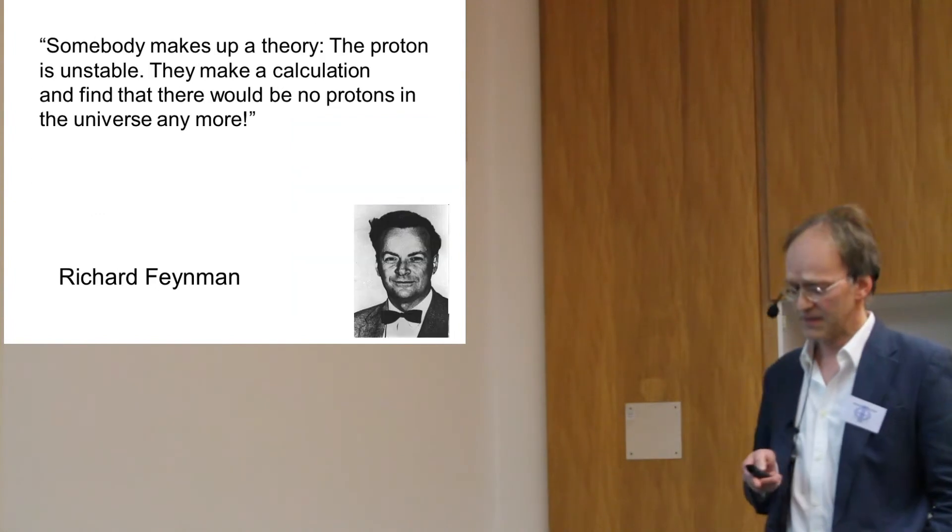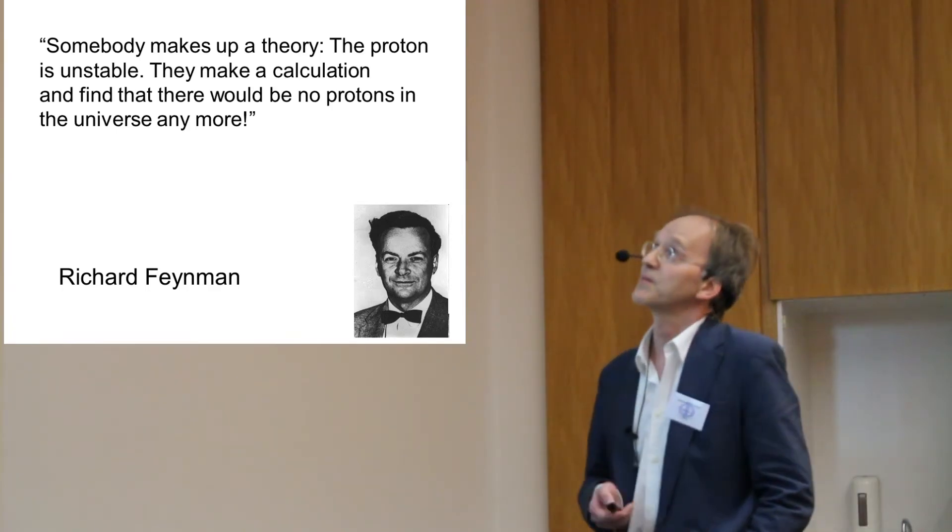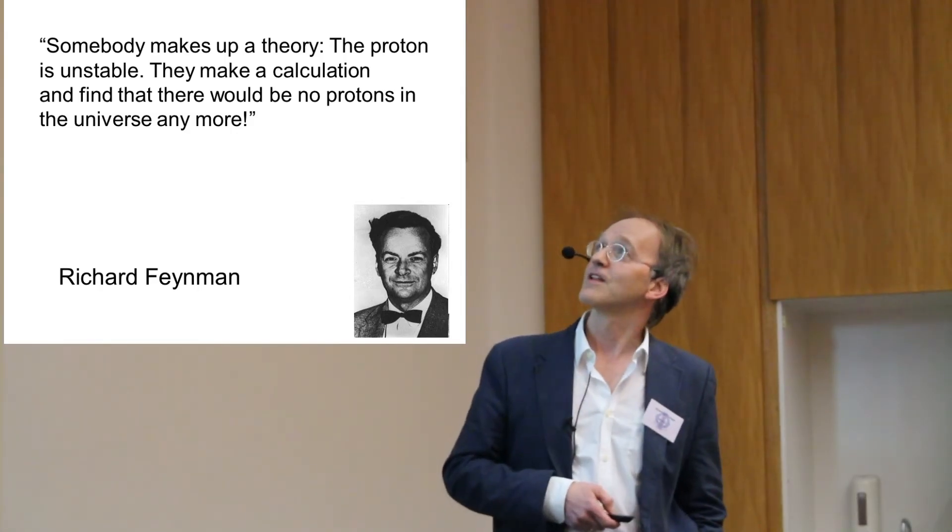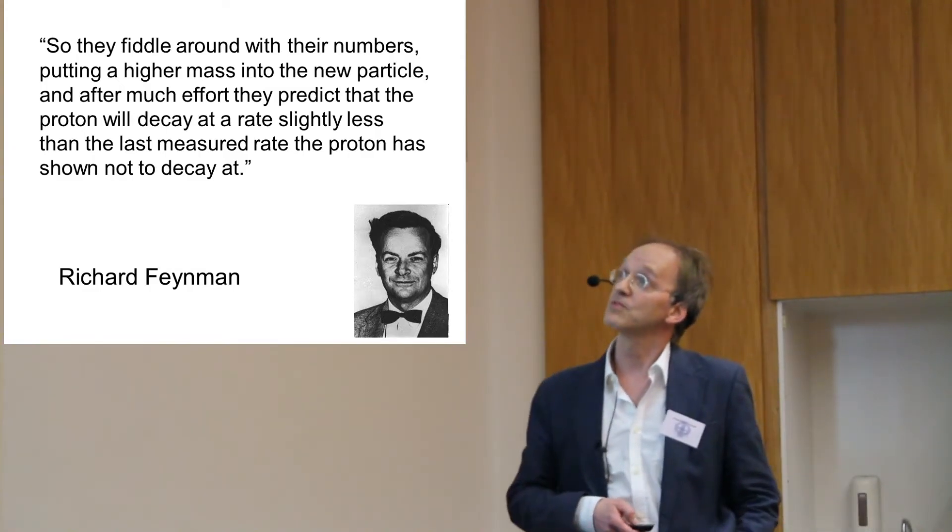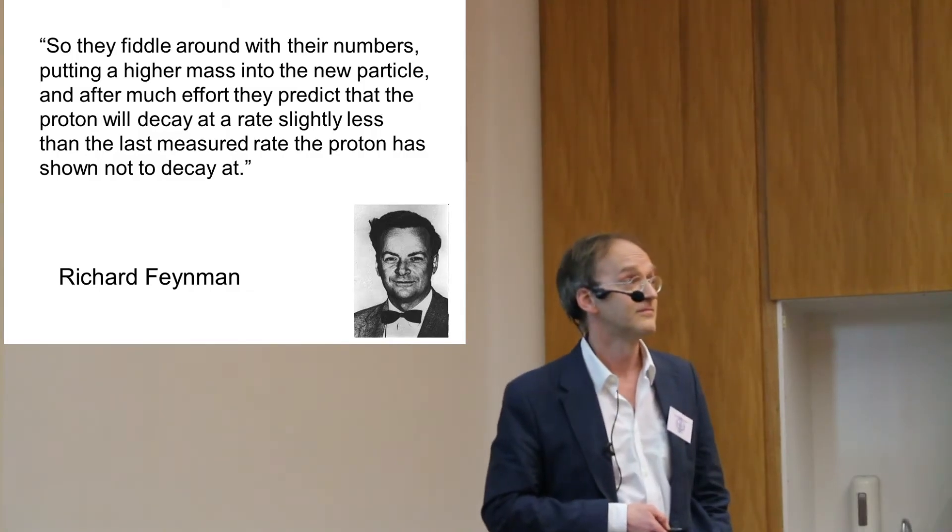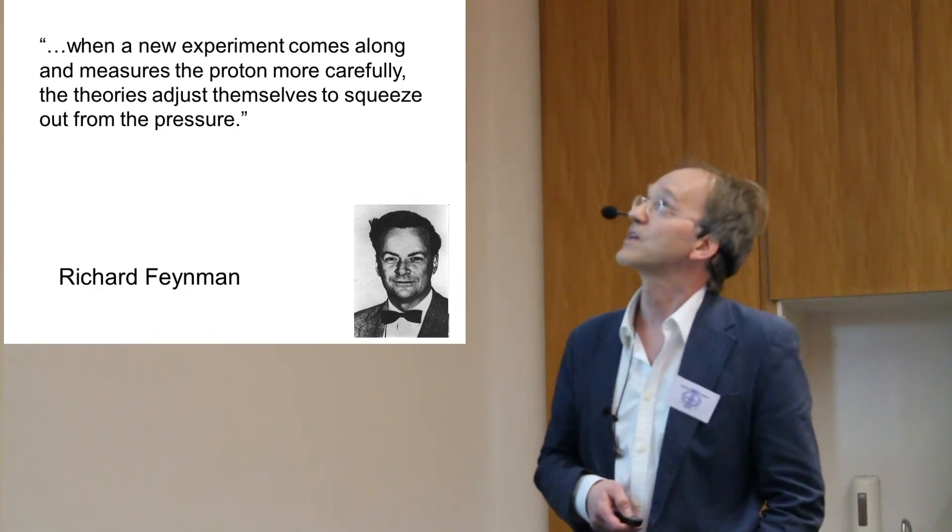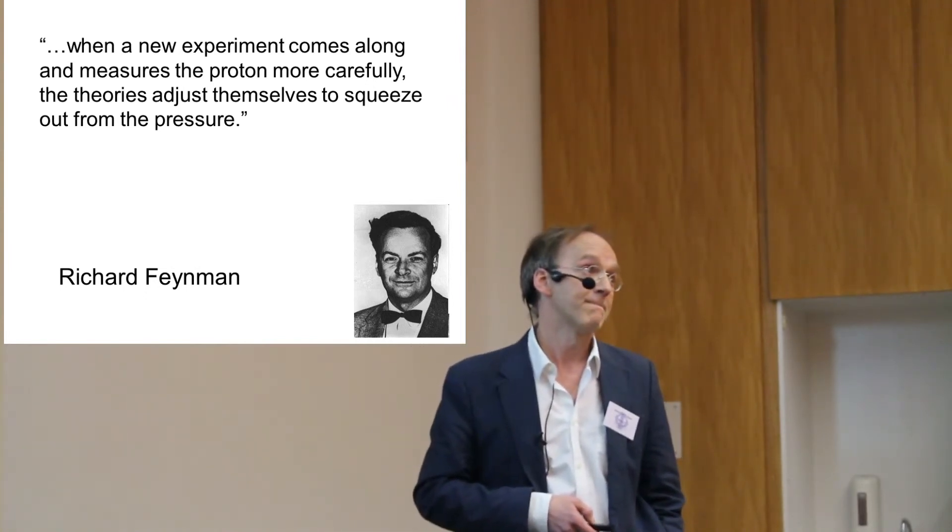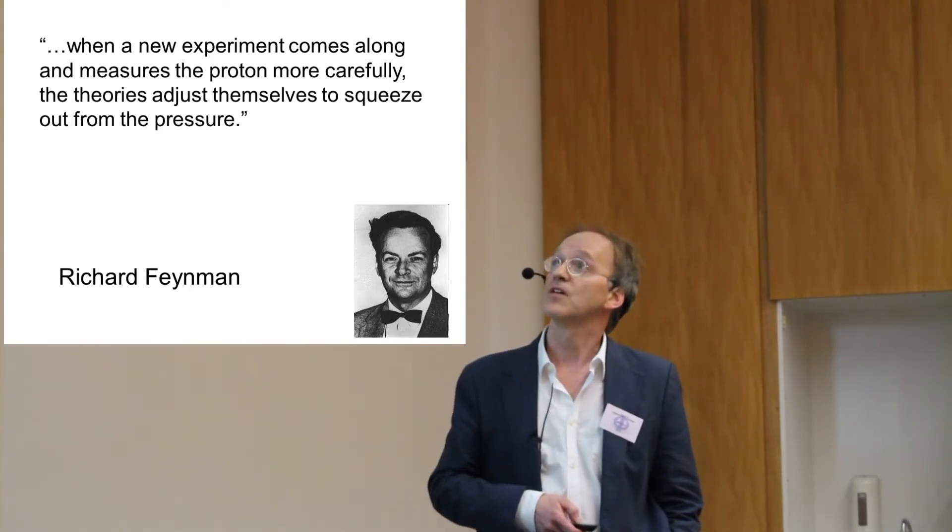This is what Richard Feynman said about the early attempts. Somebody makes up a theory, the proton is unstable. They make up a calculation and find that there would be no more protons in the universe anymore. So they fiddle around with their numbers, putting a higher mass into the new particle. And after much effort, they predict that the proton will decay at a rate slightly less than the last measured rate the proton has shown not to decay at. When a new experiment comes along and measures the proton more carefully, the theories adjust themselves to squeeze out from the pressure. And that's what happens. The predictions squeeze out of falsifiability.